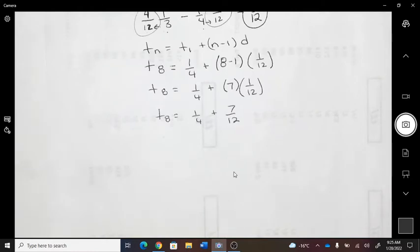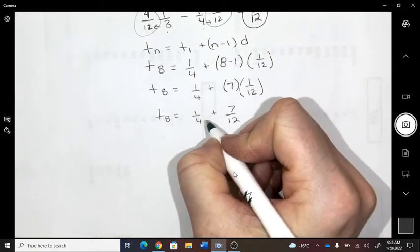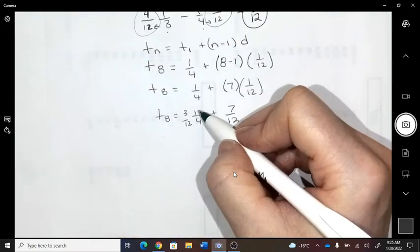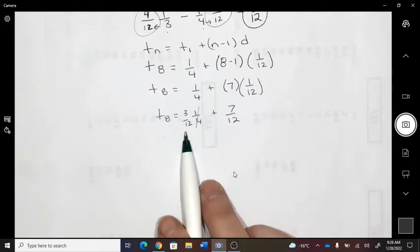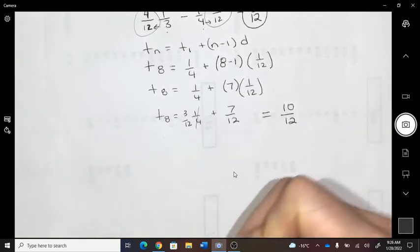And then I have to add, and again, I need a common denominator. So remember, we turned this into three twelfths up there. We times everything by three. So my final answer is three over 12 plus seven over 12, ten over 12.